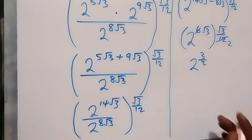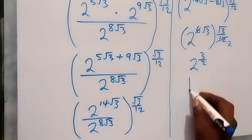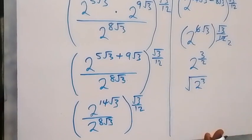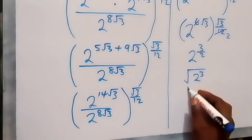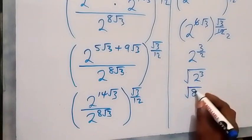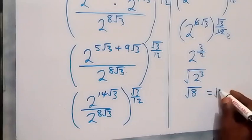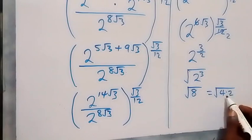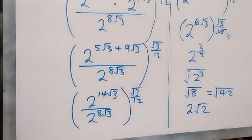We can equally write this as the square root of 2 raised to power 3. And 2 raised to power 3 is 2×2×2, which is 8. So we have square root of 8, which we can write as square root of 4 times 2, because 4×2=8. Root 4 comes out as 2, giving us 2 root 2.